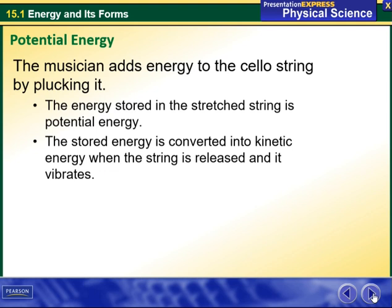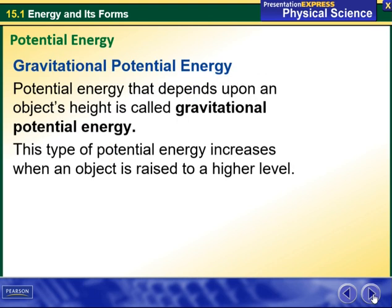The stored energy is converted into kinetic energy when the string is released and it vibrates. The gravitational potential energy, which technically is the potential energy that depends upon an object's height, is called gravitational potential energy. This type of potential energy increases when an object is raised to a higher level.